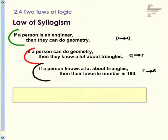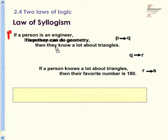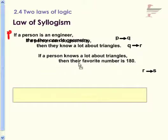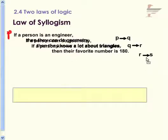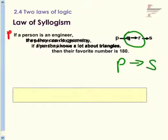How can I combine these to make a new conclusion? Because I know that P is true, then I know that Q is true. And because Q is true, I know that R is true. So if a person is an engineer, then they know a lot about triangles. Because I know that R is true, I can say that S is true. So I line up my logic statements, and because I know P is true, therefore Q is true, therefore R is true, therefore S is true — I can skip the middle parts and say if I know P is true, then I can say that S is true.